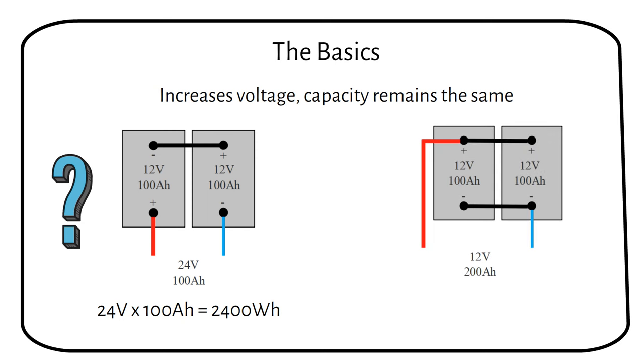If we connect the same two batteries in parallel, we still have the same available power. 12 volts times 200 amp hours equals 2400 watt hours. So a series or parallel connection does not change the total power.